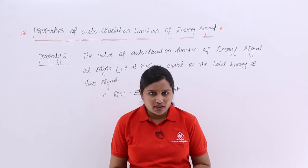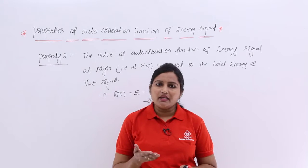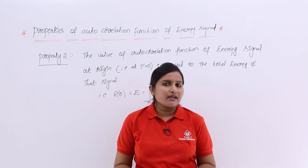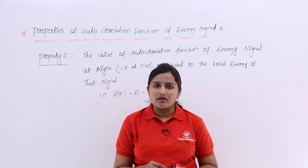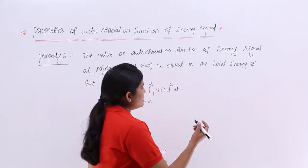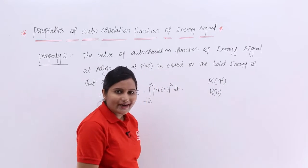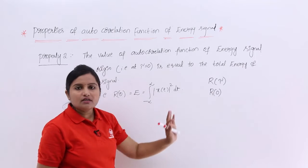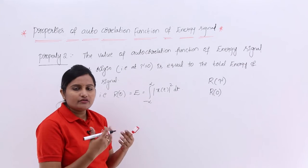If you want to calculate the energy, we already have the energy equation. For example, if anyone gives you an autocorrelation function, from that we can also get the energy of the signal. How? If they give an autocorrelation function, just substitute 0 in place of τ and you are going to get the energy. Whatever R(0) value is there, that is nothing but the energy of the signal.